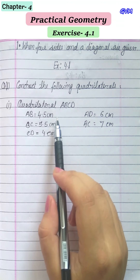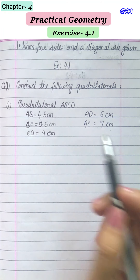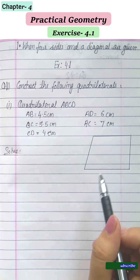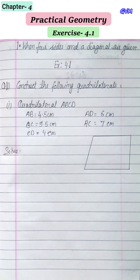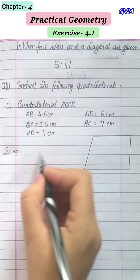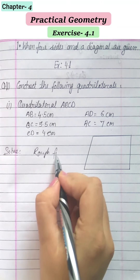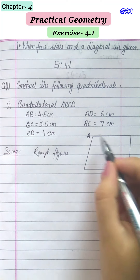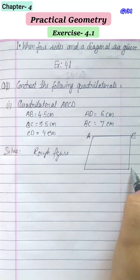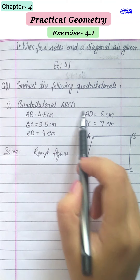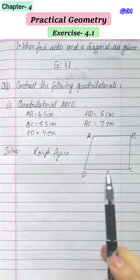First we will draw a rough diagram so we have an idea about what these sides are. In the rough diagram you can draw four lines and construct it as a closed figure — it doesn't need to be measured. A quadrilateral is always named cyclically, so if this point is A, then next is B, then C, then D.